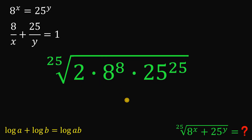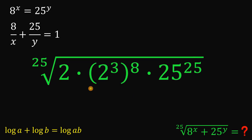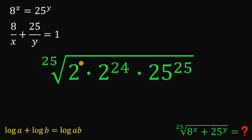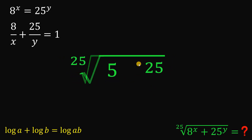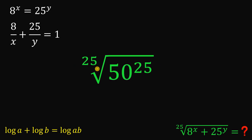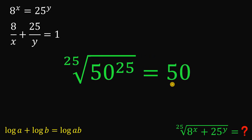Now simplify. We can rewrite 8 as 2 raised to the power of 3. Using laws of exponents, we multiply 3 and 8 to get 2 raised to the power of 24. Including the factor of 2 from the coefficient, we get 2 raised to the power of 25. Since 25 raised to 25 also has an exponent of 25, we can multiply the bases: 2 times 25 is 50, giving us 50 raised to the power of 25. The 25th root of 50 raised to 25 is simply 50.